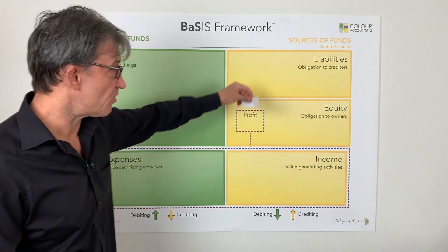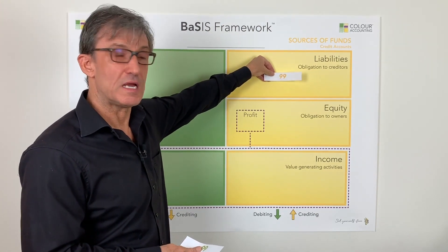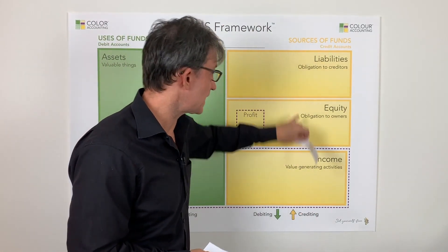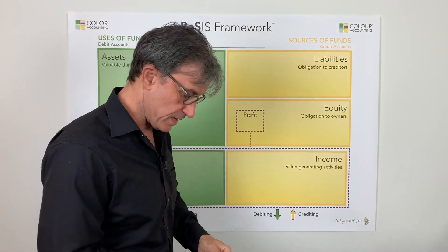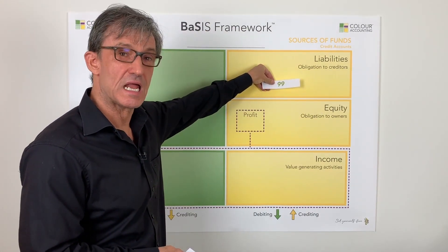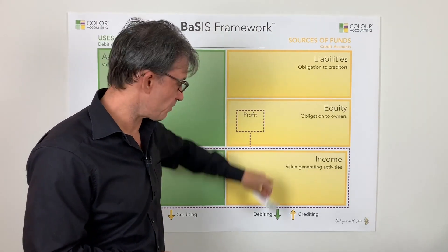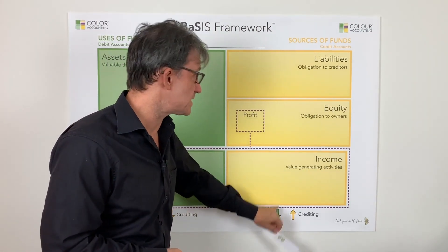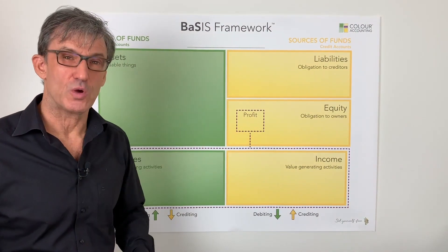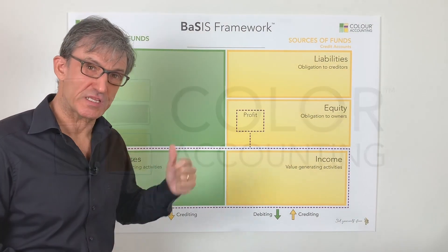Over here, if I put a yellow number, it would increase this liability account because I'm crediting a credit type account. But if I put a green number in a liability account, it would decrease that account because I would be debiting a credit account. This is the basis framework — we'll explain these key misunderstandings using this framework.